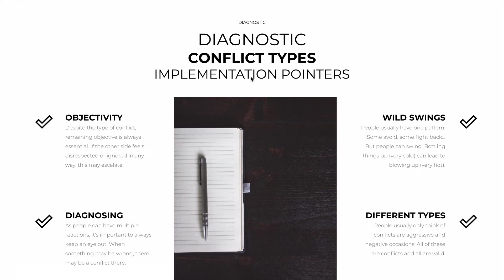What are some implementation pointers in terms of the different conflict types? The first is objectivity. Despite the type of conflict, remaining objective is always essential. If the other side feels disrespected, ignored, or victimized in some way, things will get worse. And in many cases, they already do this even if you are objective — so if you're not, it'll be even worse.